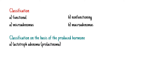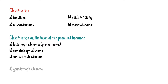If they produce somatotropin, the growth hormone, then we talk about a somatotroph adenoma. If they produce adrenocorticotropic hormone, then a corticotroph adenoma. We also have gonadotroph adenomas that produce excessive amounts of follicle stimulating hormone or luteinizing hormone, and thyrotroph adenomas that produce thyroid stimulating hormone. These two are very rare, so we're not going to spend too much time on them.